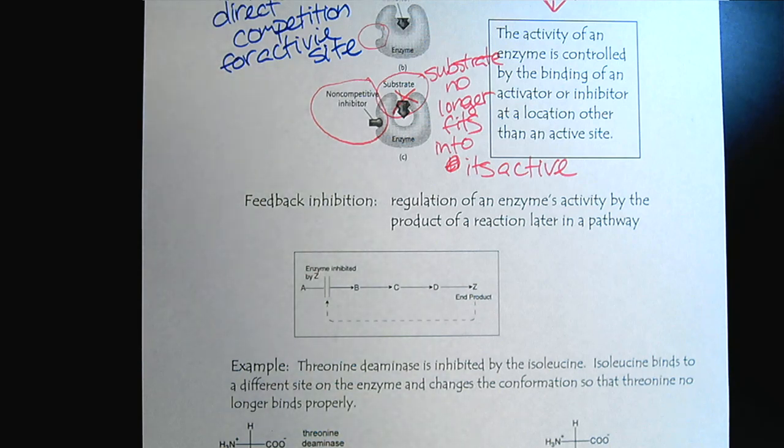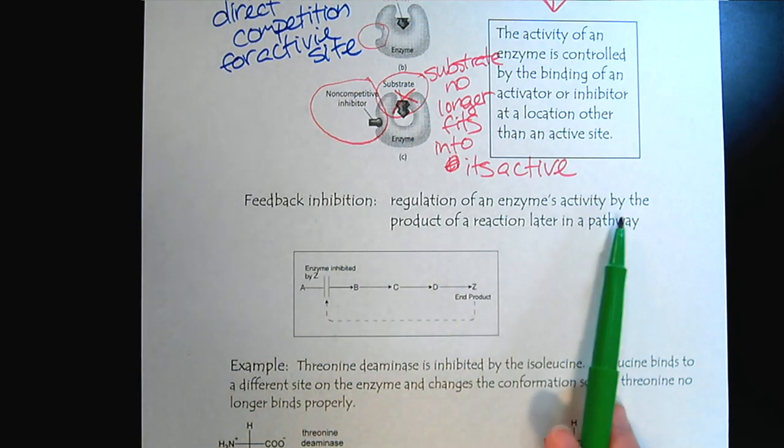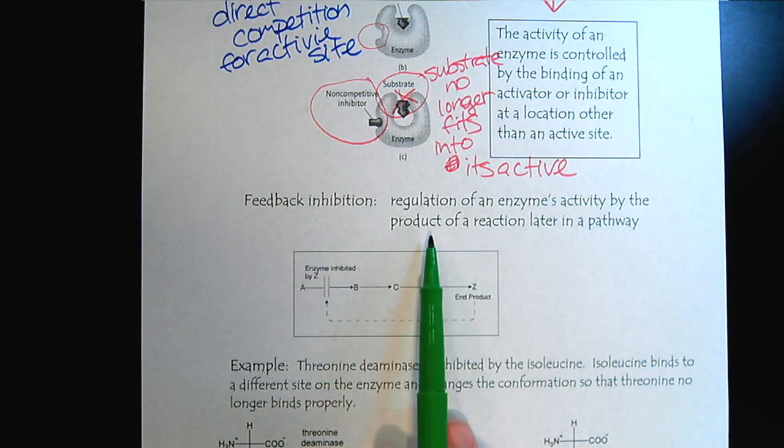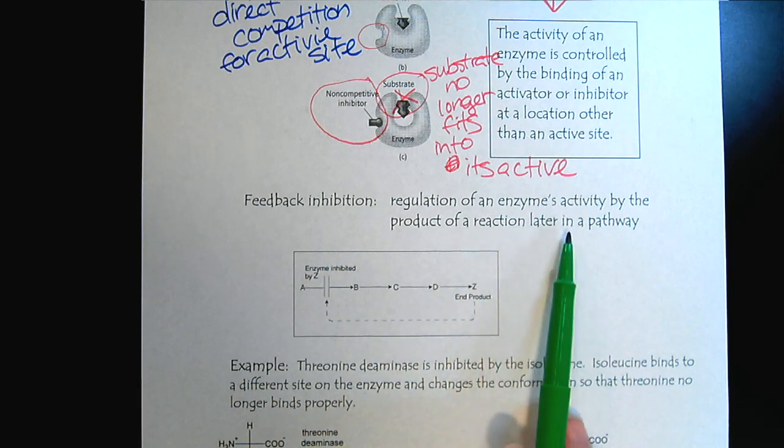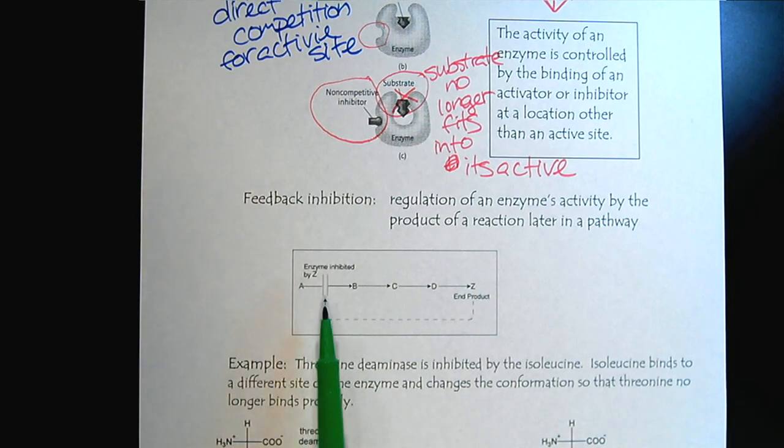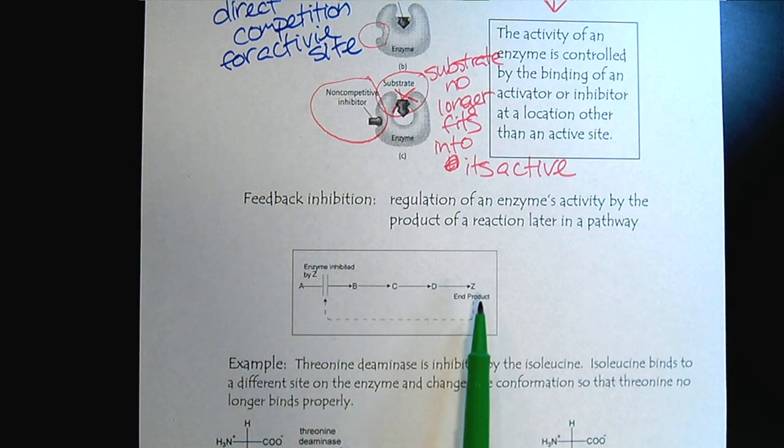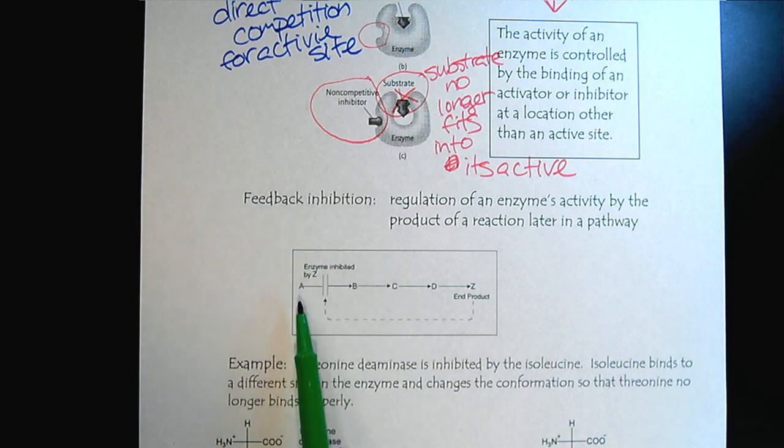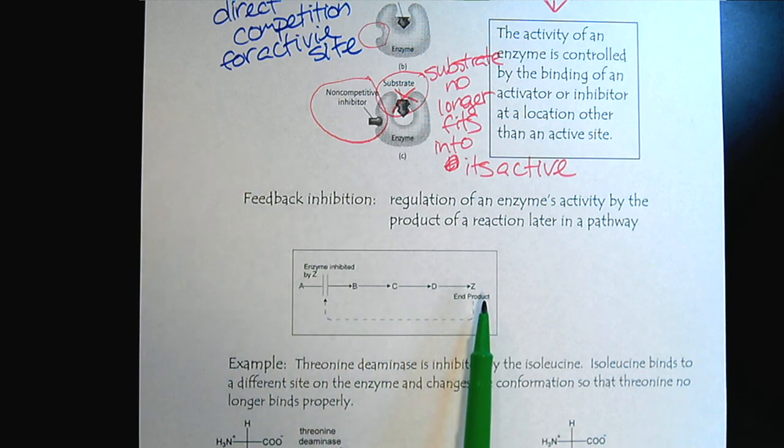So an idea of feedback inhibition is that we regulate an enzyme's activity using a product of a reaction later in the pathway. So typically, most biochemical pathways will have several reactive steps. And so if our body has A in hand and wants to produce Z, it'll go through a series, substrate A will go through a series of chemical transformations to get to our end product,